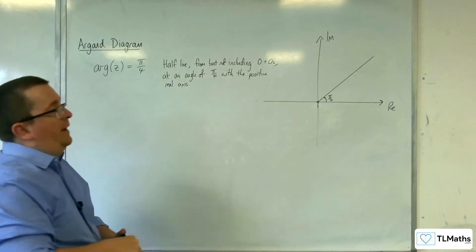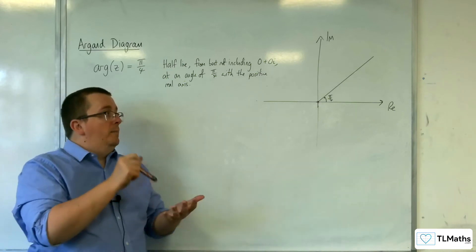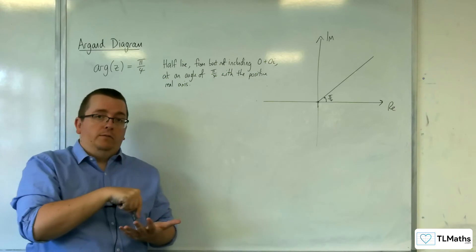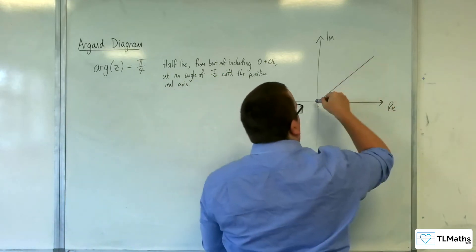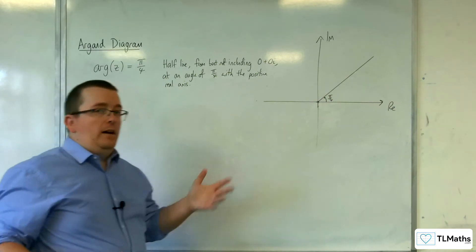So really what it's saying is that any complex number that makes an argument of pi over 4 is included. And that means it's any point that is along that line apart from the origin. And we refer to it as a half line.